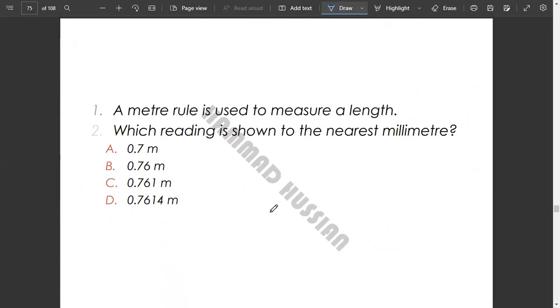A meter rule is used to measure a length. Which reading is shown to the nearest millimeter? Millimeter is 10 to the power minus 3, so minus 3 means that you have 3 decimal places back. That would be 0.761 meter.